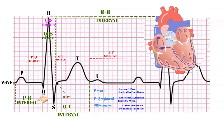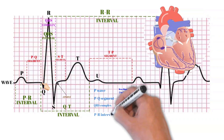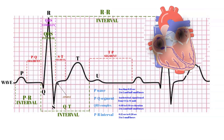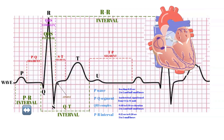The PR interval begins at the start of the P wave and ends at the beginning of the Q wave. It represents the time taken for electrical activity to move between the atria and the ventricles, normally ranging from 0.12 to 0.20 seconds in duration, or 3 to 5 small boxes. This interval represents the time between the onset of atrial depolarization and the onset of ventricular depolarization. If the PR interval is greater than 0.20 seconds or greater than 5 small boxes, there is an AV conduction block called a first-degree heart block.